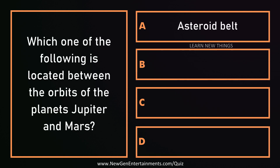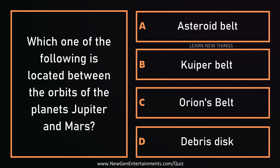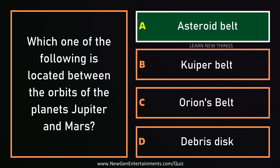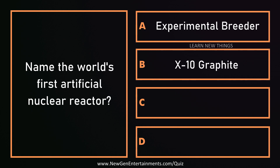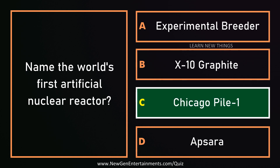Which one of the following is located between the orbits of the planets Jupiter and Mars? The Asteroid Belt. Name the world's first artificial nuclear reactor. Chicago Pile 1.